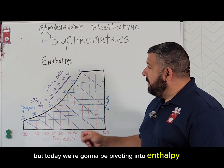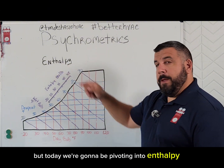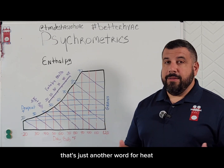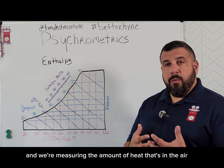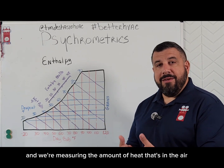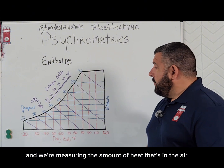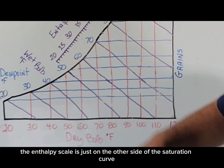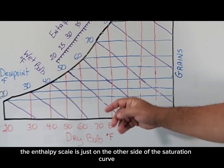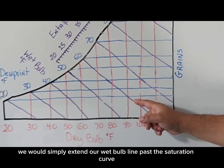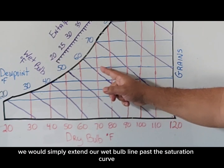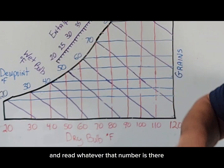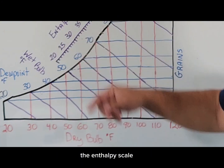But today we're going to be pivoting into enthalpy. What is enthalpy? Enthalpy is heat — that's just another word for heat — and we're measuring the amount of heat that's in the air. Now the enthalpy scale is just on the other side of the saturation curve. So in order to read that, we would simply extend our wet bulb line past the saturation curve and read whatever that number is there in the enthalpy scale.